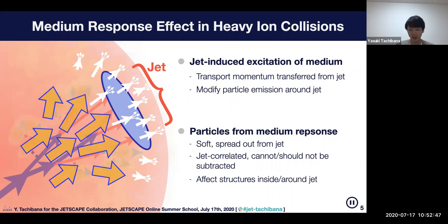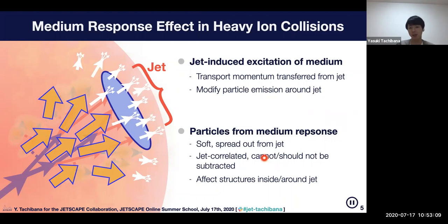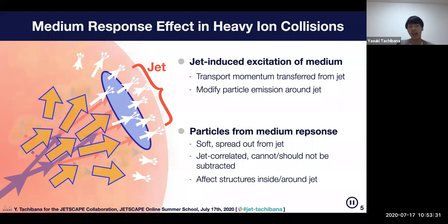These particles are measured together with the jet and are usually soft and spread out from the jet. They are correlated with the jet, so we don't have a good way to distinguish them from the showering part of the hadron. We cannot subtract them, and also we can say they are part of the jet. They affect structures of jet and also outside the jet — for example, in jet-hadron correlations those hadrons can come from medium response.